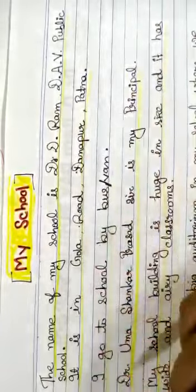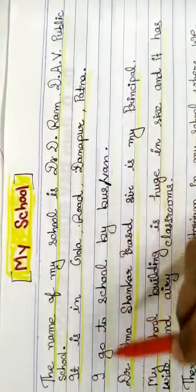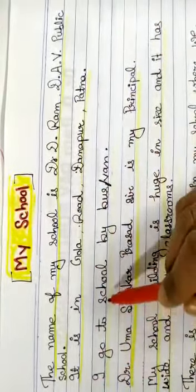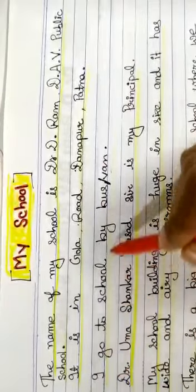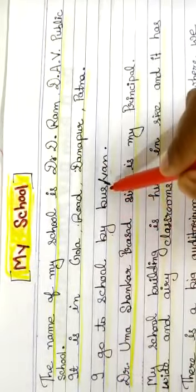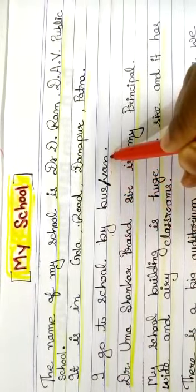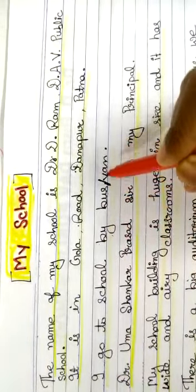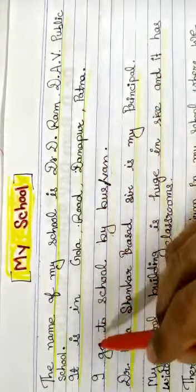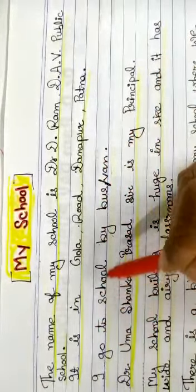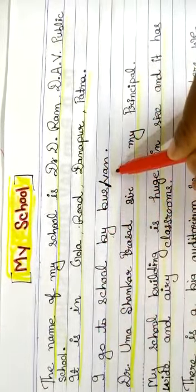Then, how do you go to school? You will write: 'I go to school by bus or by van.' If you go by your own means, you will write: 'I go to school by my own means.'